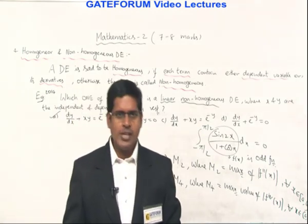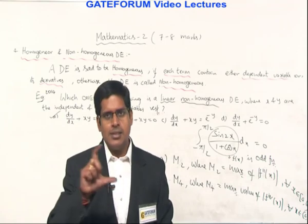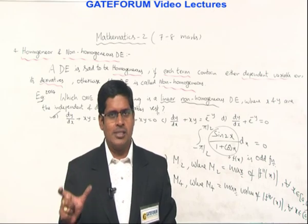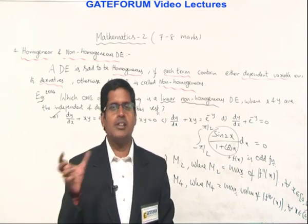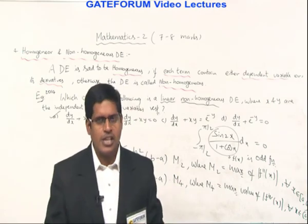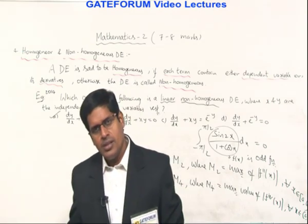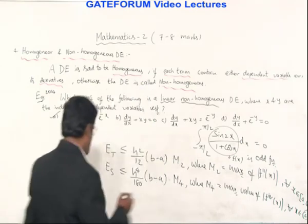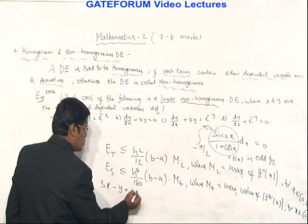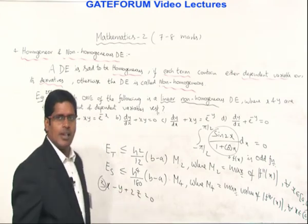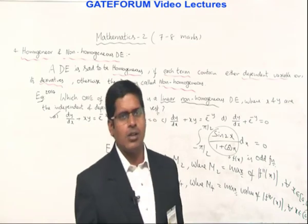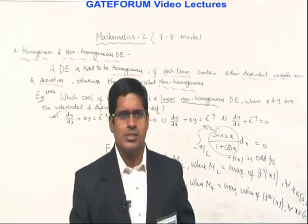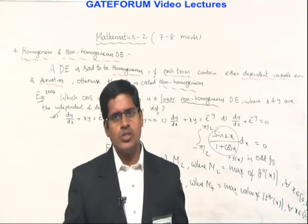A question from another student: what is the meaning of 'pivot' in numerical methods? It generally refers to the diagonal elements. For a system of equations, the diagonal elements a₁₁, a₂₂, a₃₃ are called pivot elements. For example, in 3x − y + 2z = 0, the pivot element is 3. Pivot elements are generally considered large compared to other elements in the same equation.